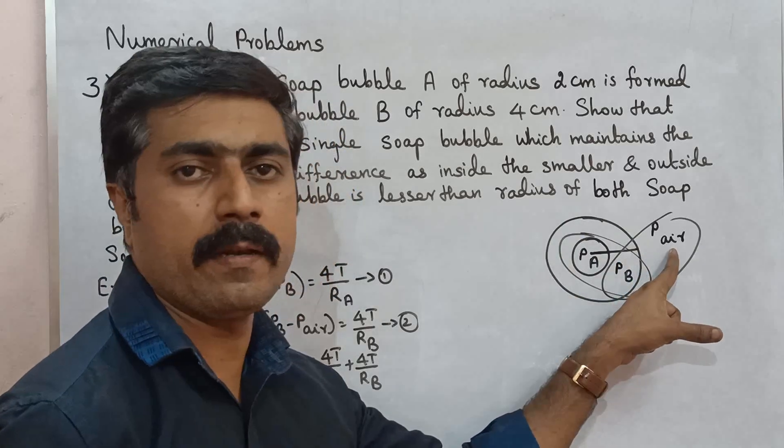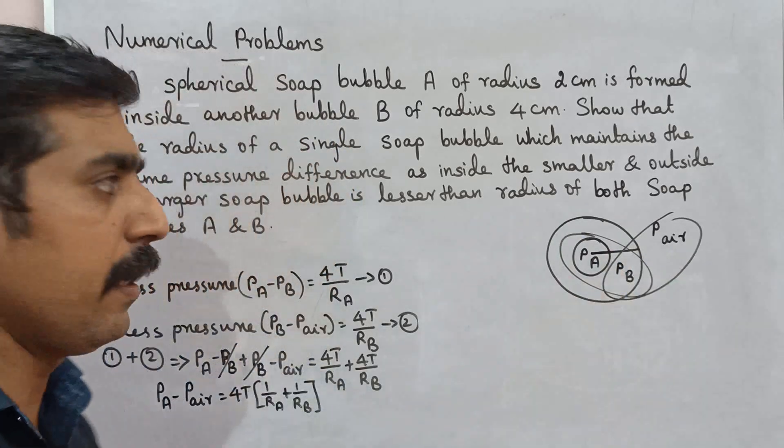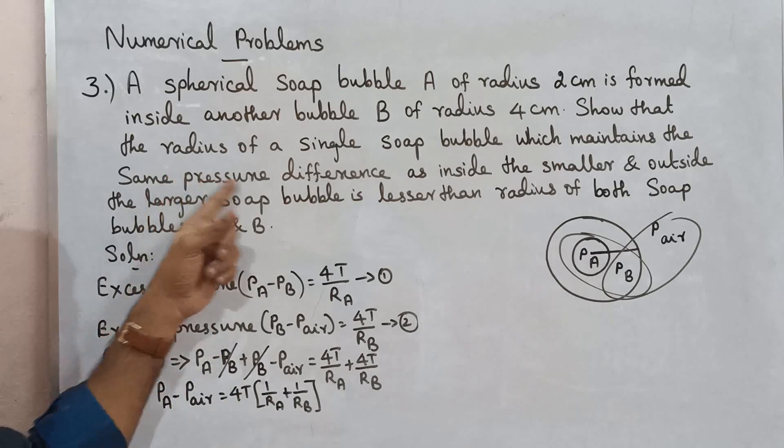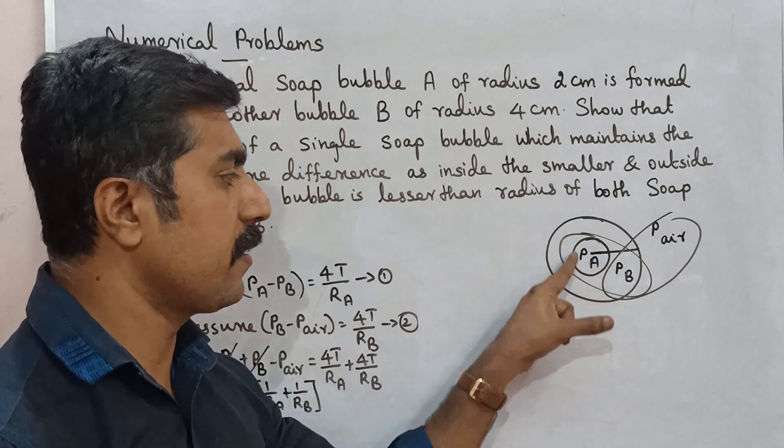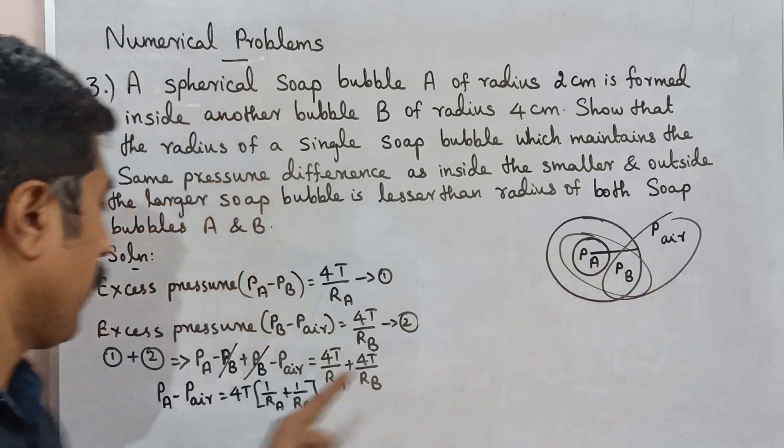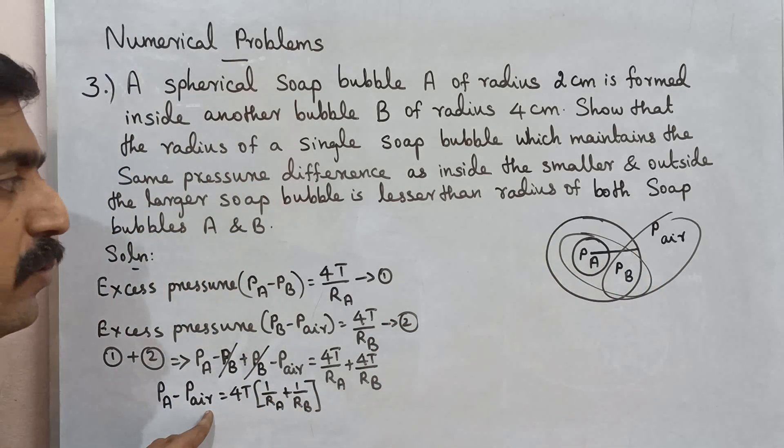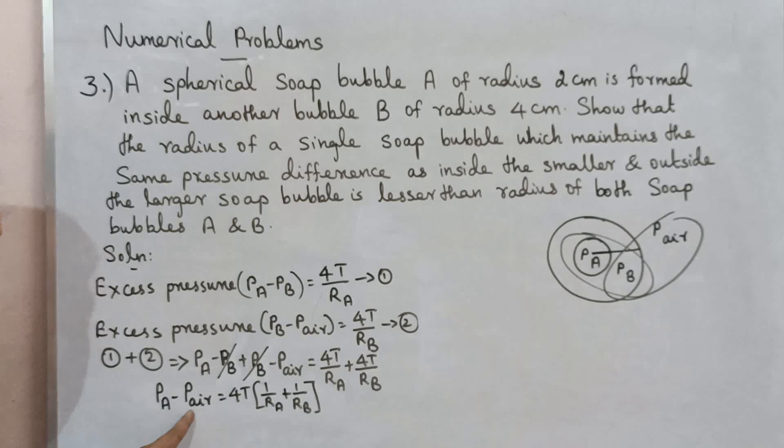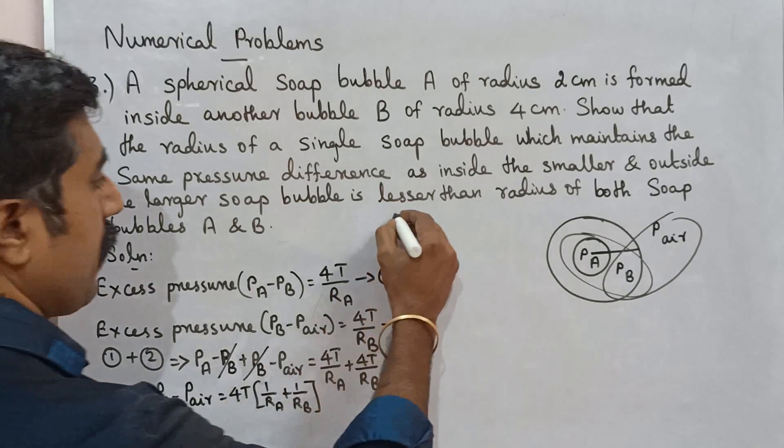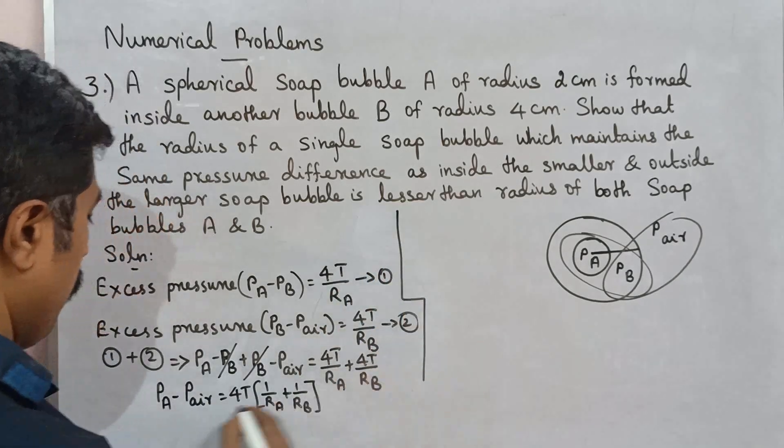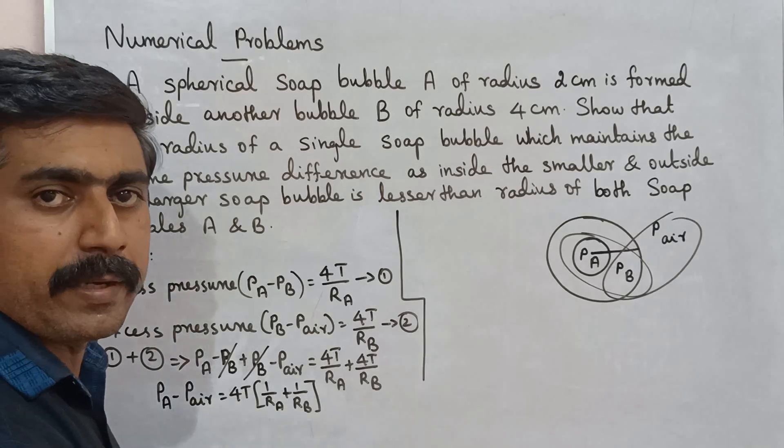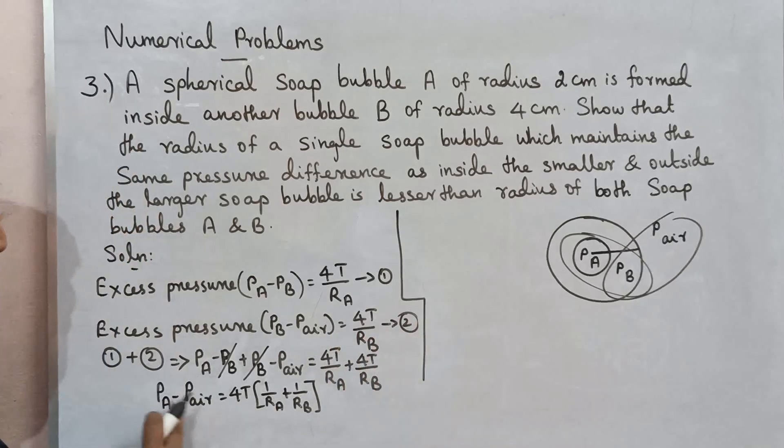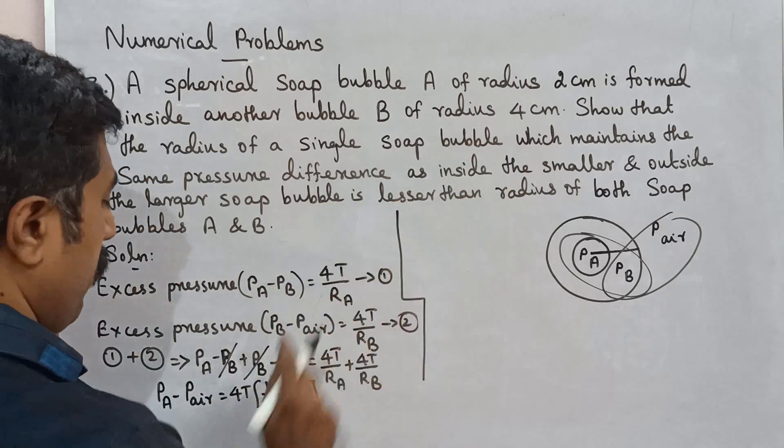So the difference is equal. It will be equal, same pressure difference. Pa is pressure inside the smaller bubble. Po is pressure outside the bigger bubble. So on the other hand, Pa minus Po, the single bubble's pressure difference, which is equal...